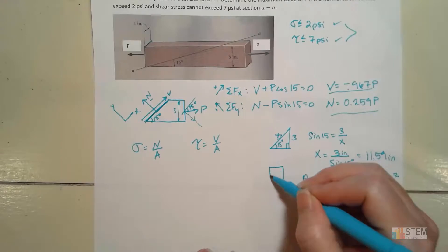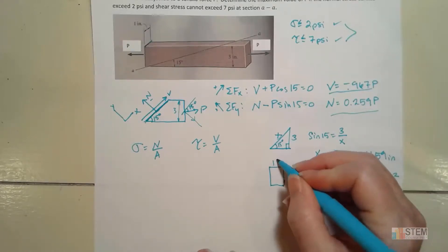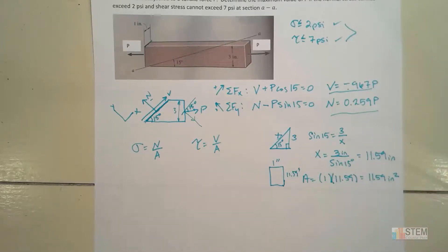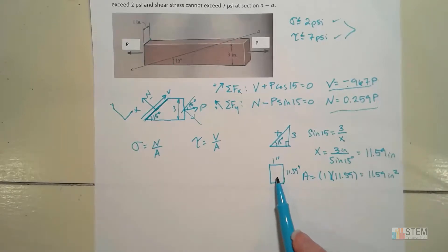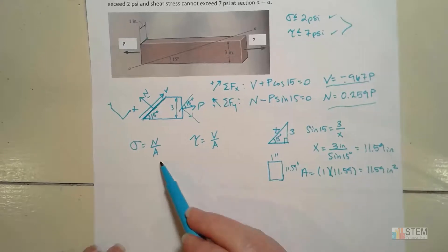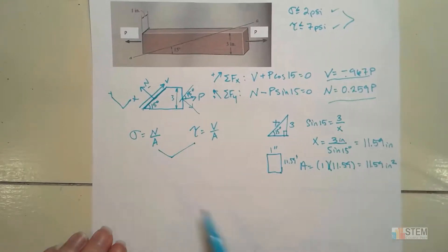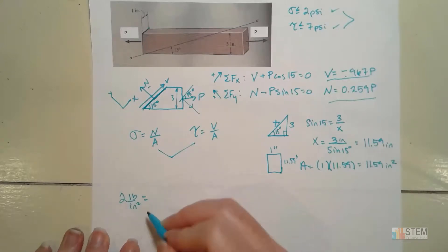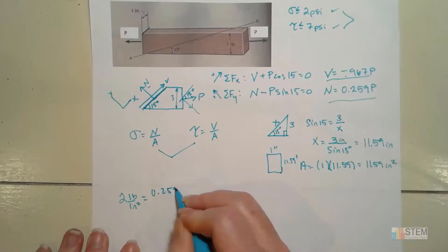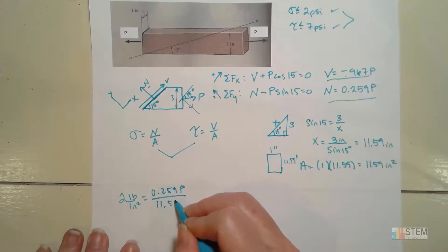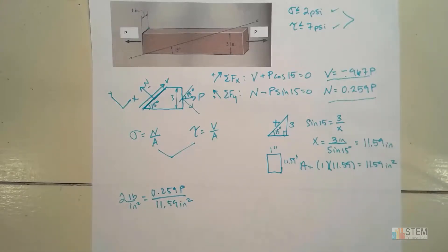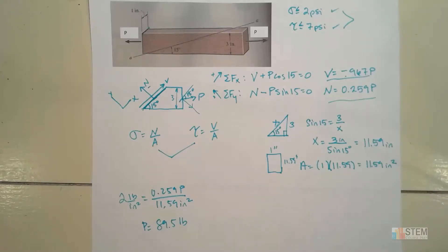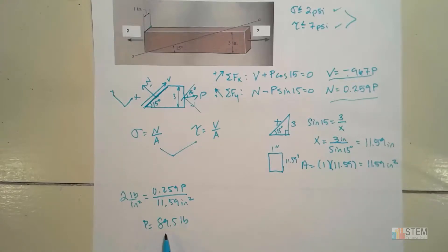Now that we have the area, let's start with normal stress. So that's 2 PSI — pounds per square inch — set equal to N over A, which is 0.259 P over 11.59 inches squared. We have one unknown and one equation, so we can solve for P. P then will be 89.5 pounds. This is the max P we can have and not exceed the normal stress specification.